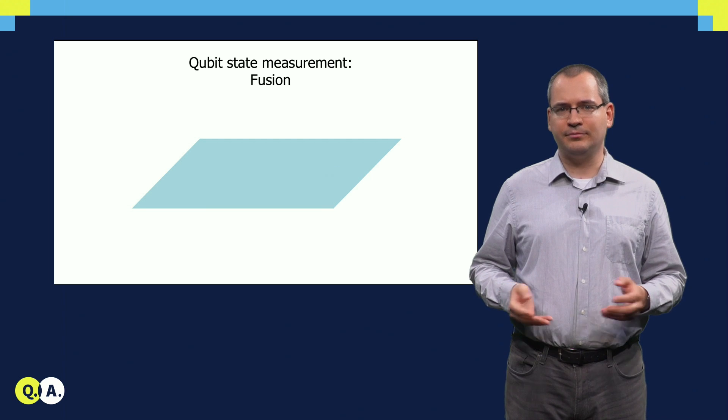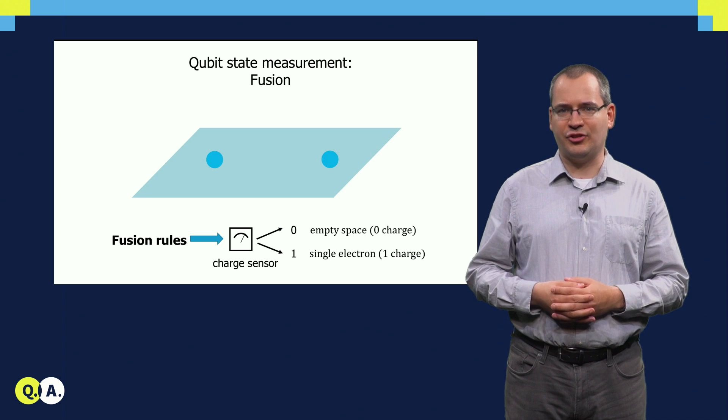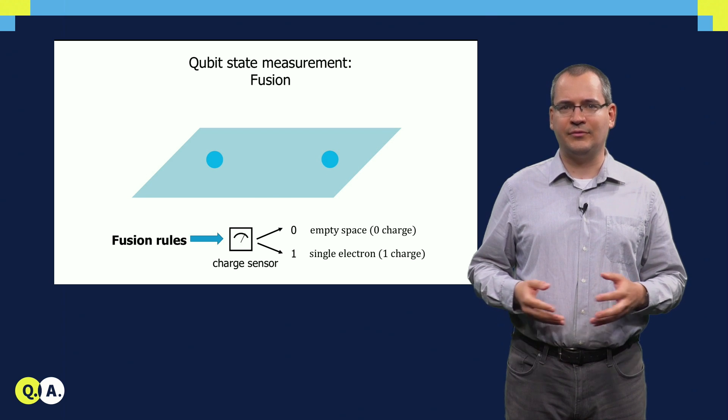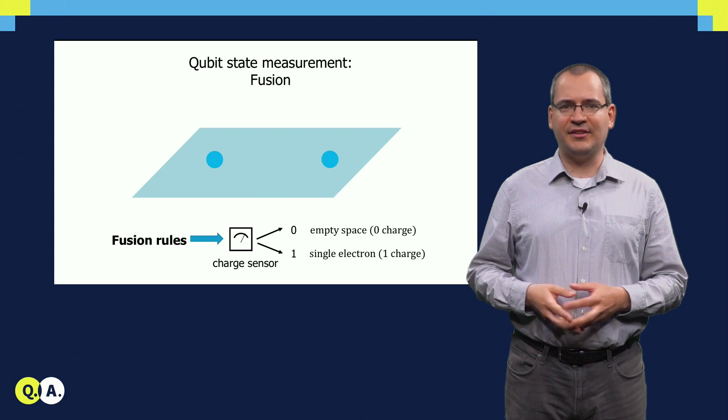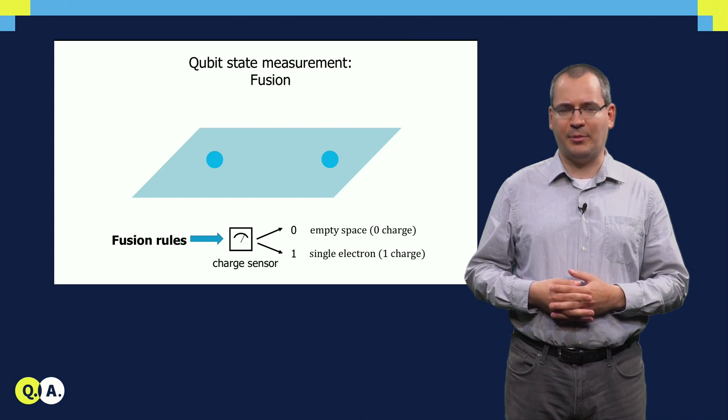In our case, that is the Ising anyons, this can result in a single electron, that is one elementary charge, or no electron, zero charge. We can then distinguish between these two states with charge sensors, as it is done for instance for spin qubits.